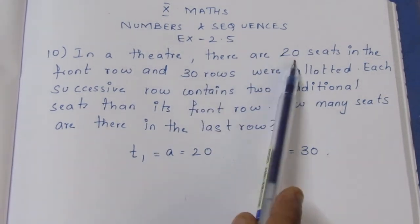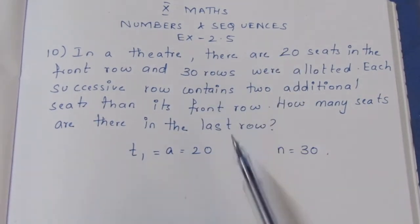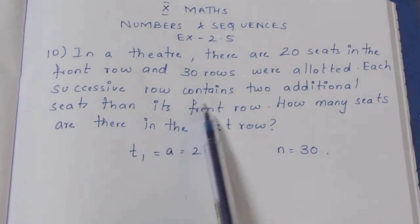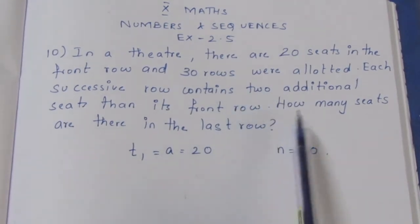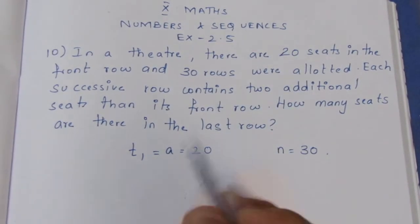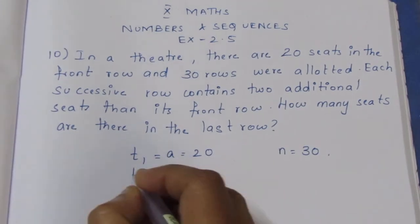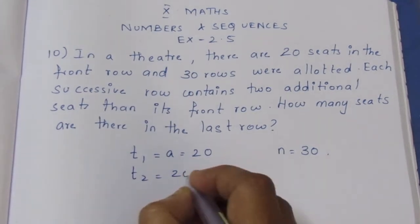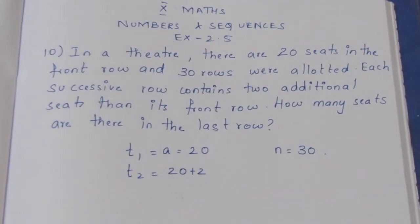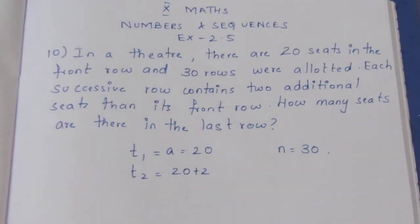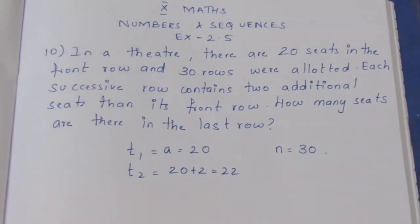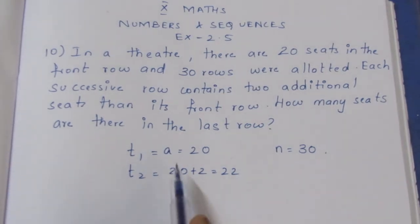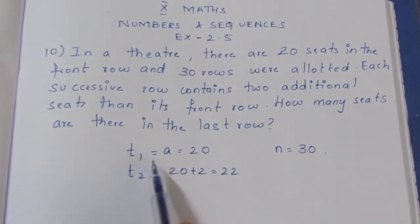Each row increases by 2 seats. You can add it — the rule is 20 plus 2. So the second row is 22 seats.